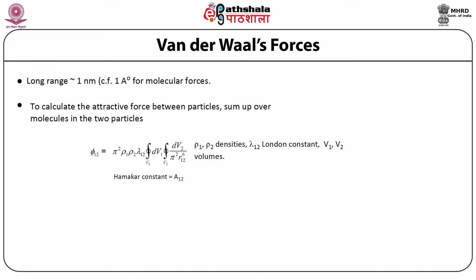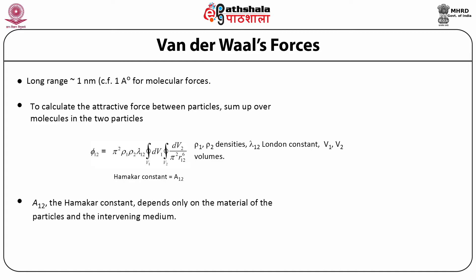The quantity before the double integral is called the Hamaker constant A12 for the two particles, where A12 = pi² · rho_1 · rho_2 · lambda_12. The Hamaker constant is a function of only the two materials and the medium separating them. To illustrate, the values of Hamaker constant for some ceramics in water are of order 10⁻³⁰ joules: for TiO2 it is 26 × 10⁻³⁰ J, for zirconium oxide it is 13 × 10⁻³⁰ J, and similarly for Al2O3 and MgO.